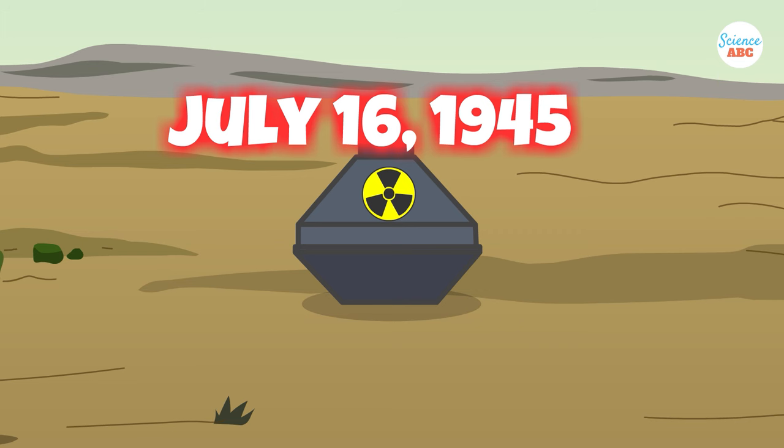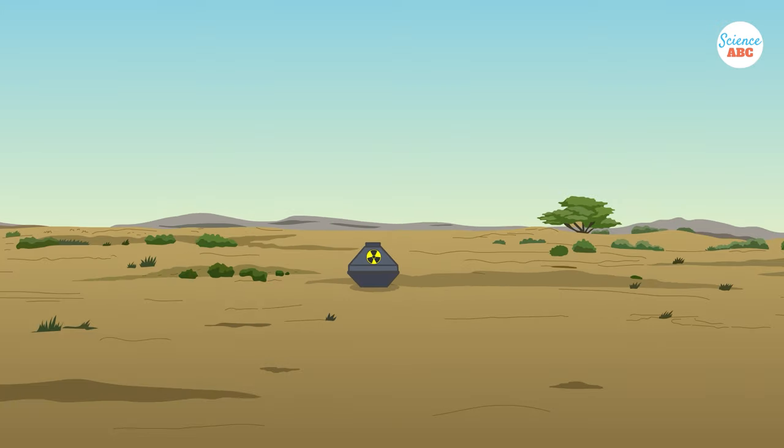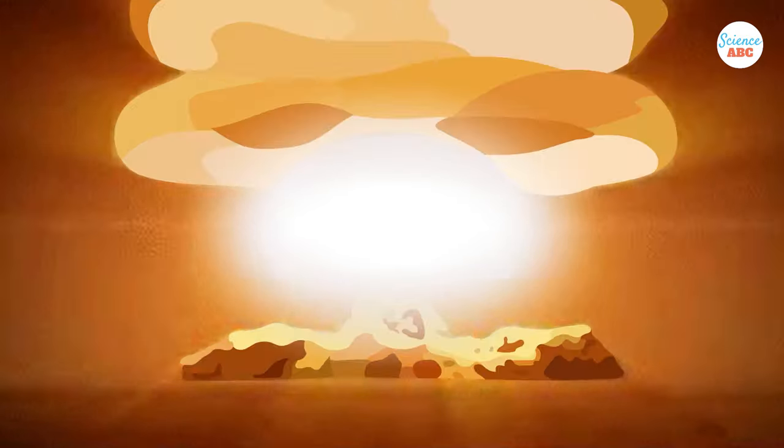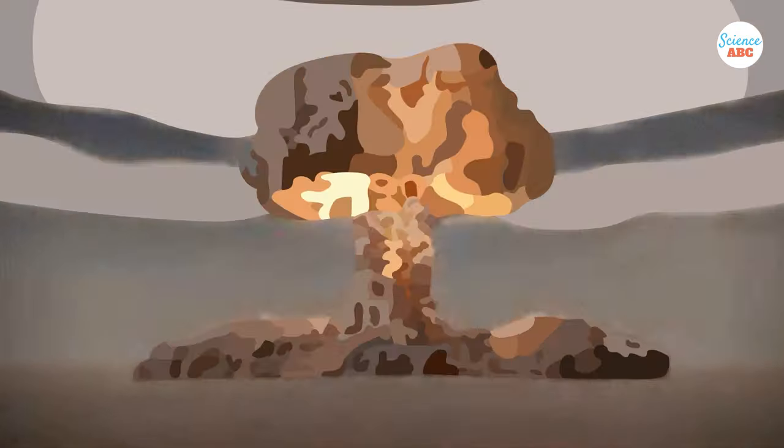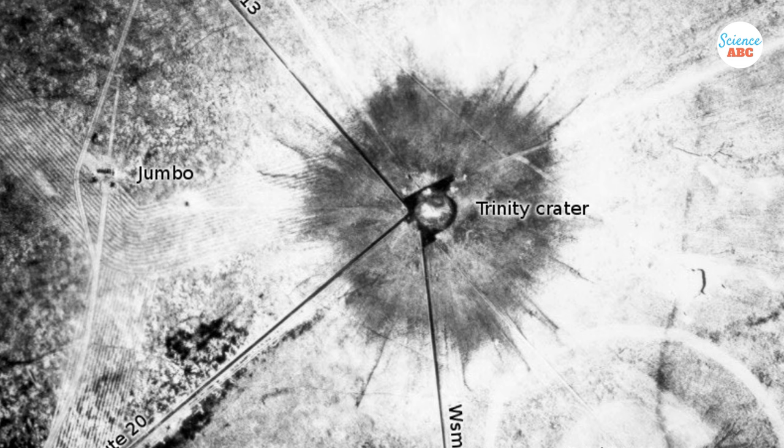On July 16, 1945, a new type of bomb—equal to 24 kilotons of TNT—scorched the desert of New Mexico. The Trinity Test Bomb was the first time an atomic bomb ever detonated.